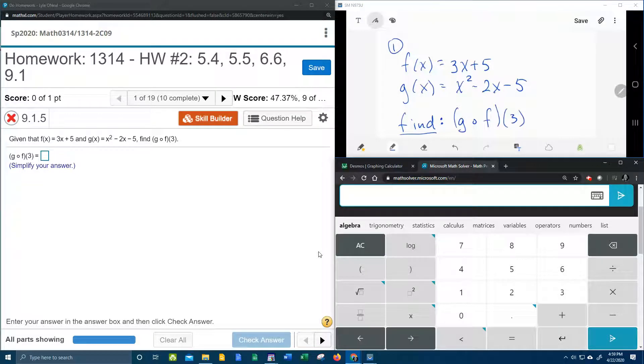Alright, here we go. Number 1 from our college algebra homework number 2 in MyMathLab. It says given f of x is 3x plus 5, and g of x is x squared minus 2x minus 5, they want us to find g circle f of 3.